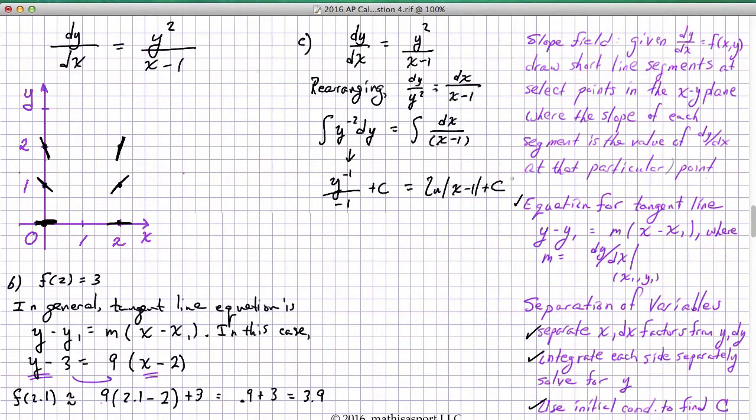The details are left for the videos that talk about separation of variables. But the key issue is the c's are simply a representation of what we don't know. So we can consolidate them together and call them some new c. What I'm going to do is I'm going to multiply everything through by a negative 1. So now I have y inverse equals negative ln of x minus 1 absolute value. But it's still just plus c because we're just consolidating what we don't know into this single letter c.